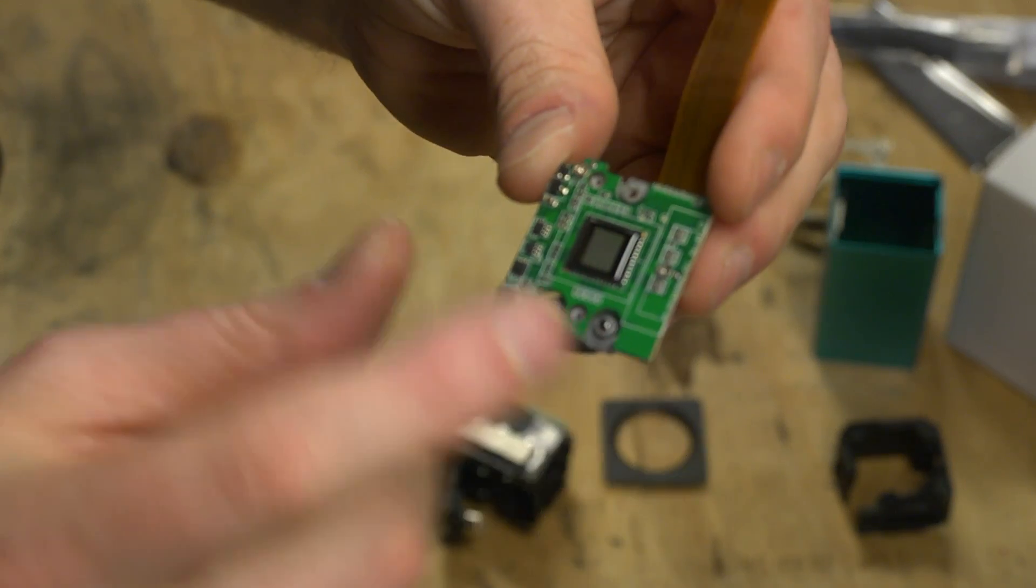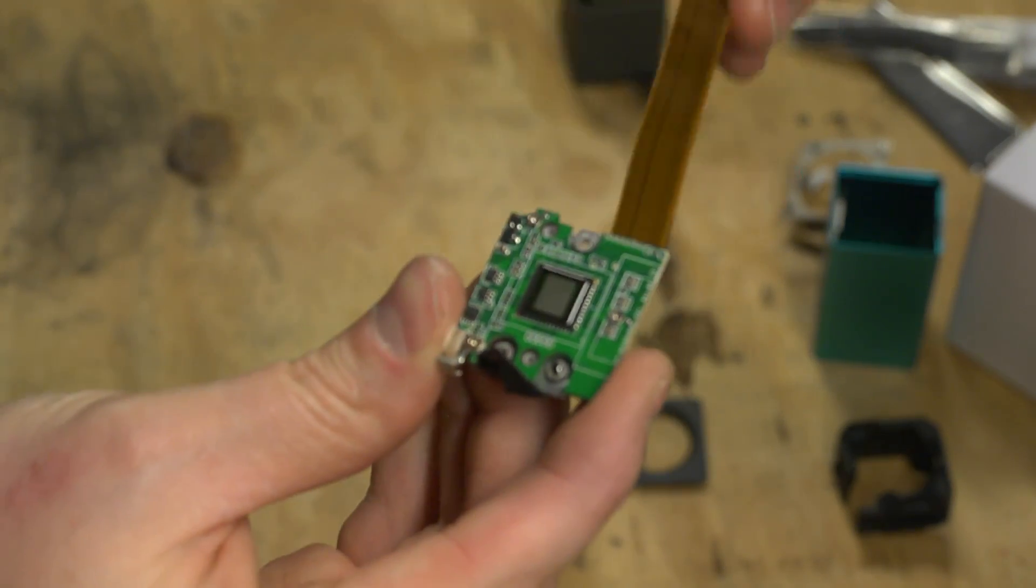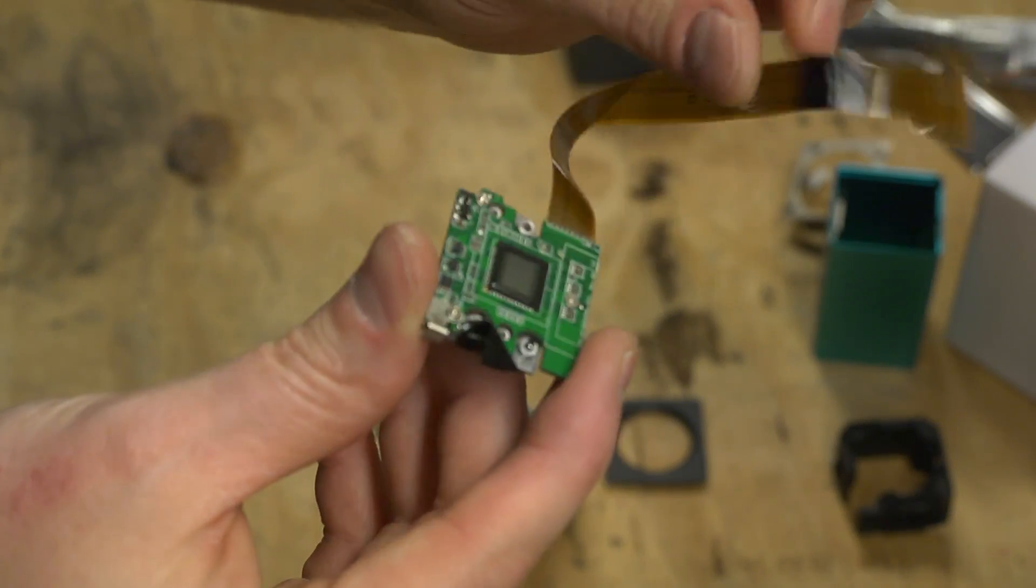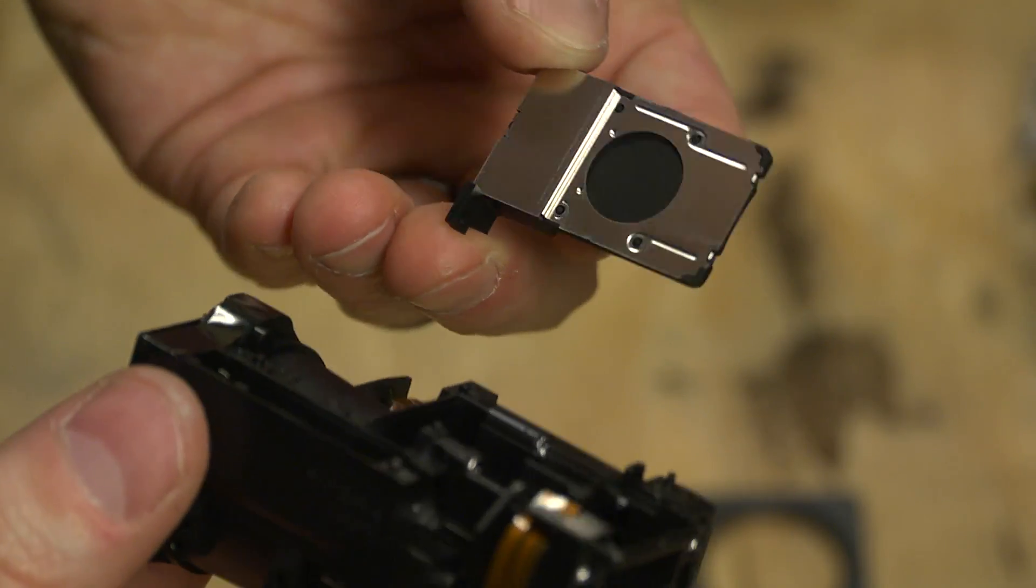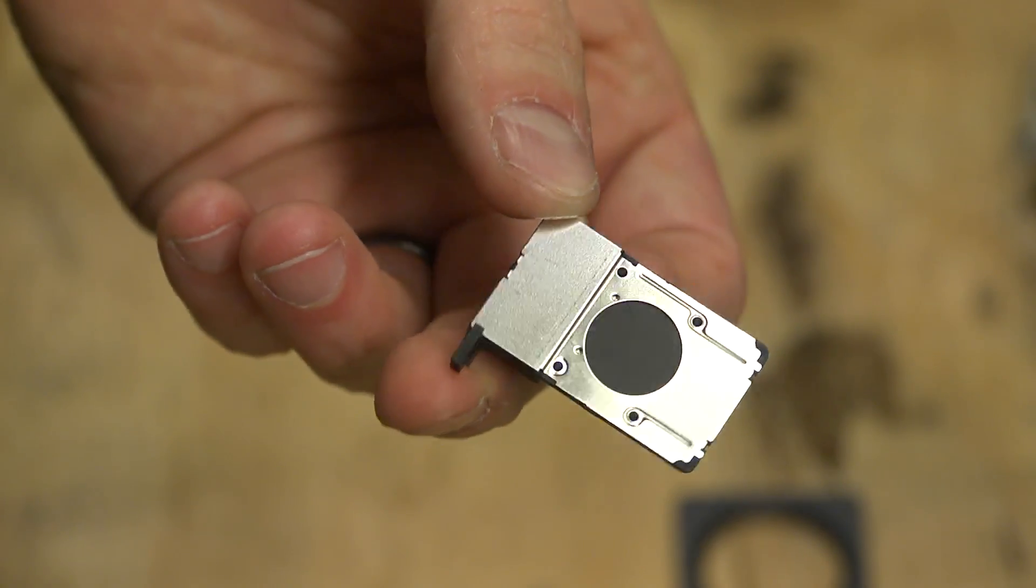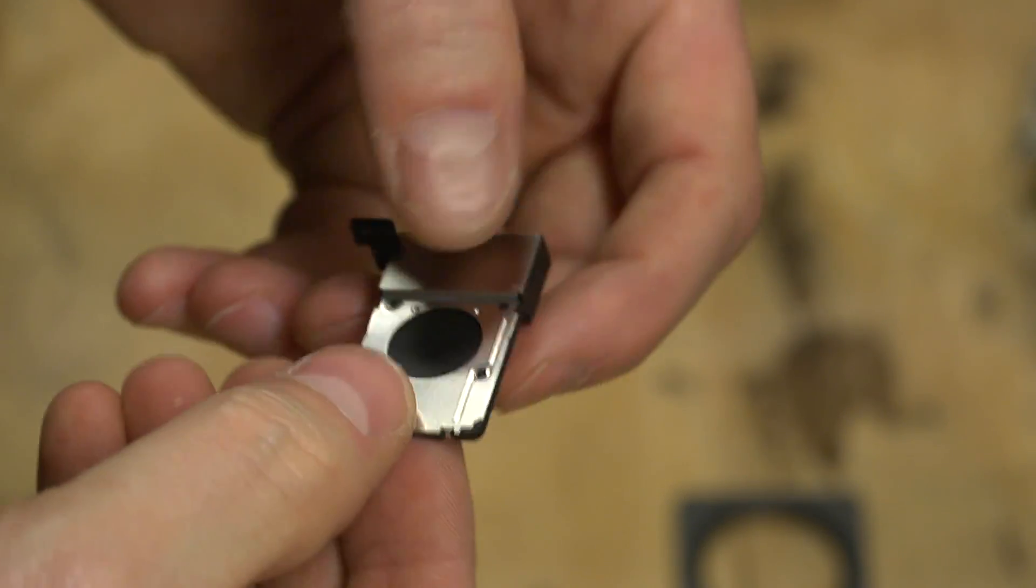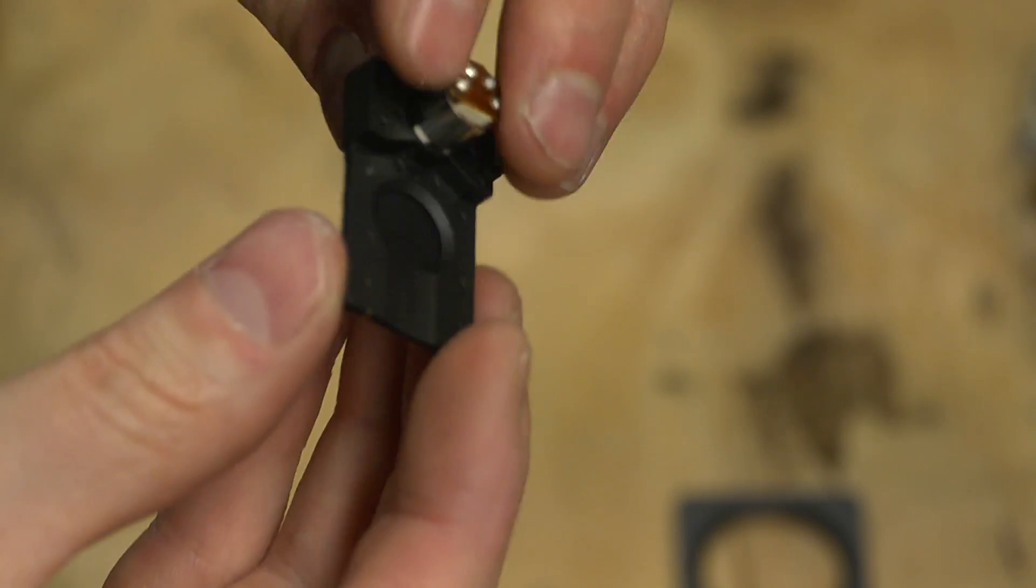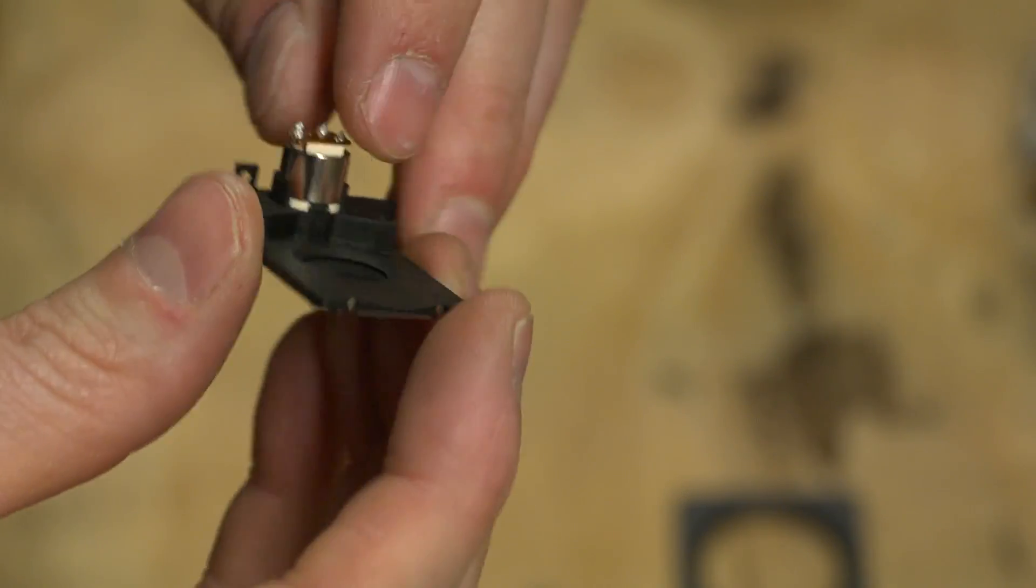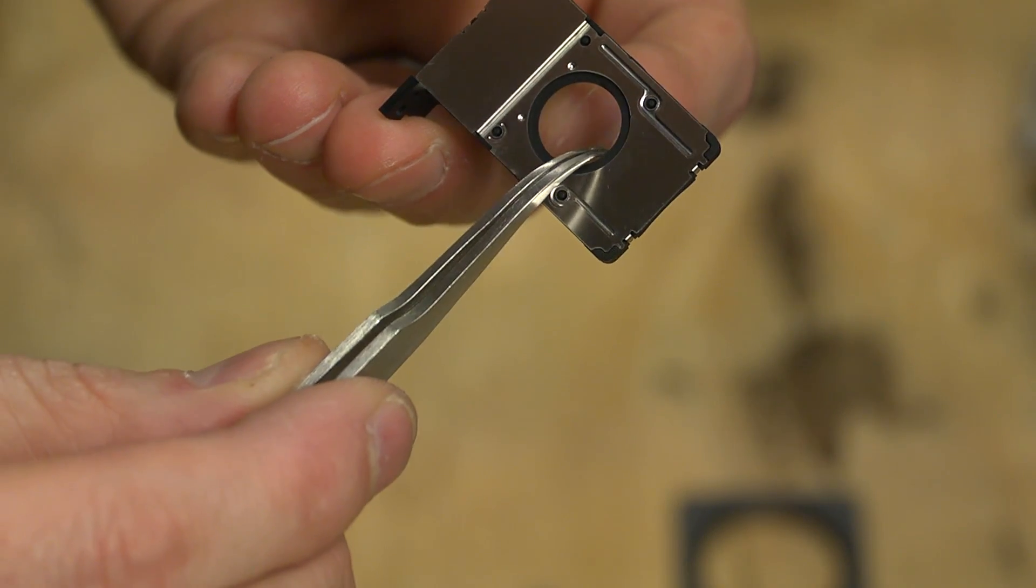So here we go. If anybody needs one, I just want you to know I have an extra Lytro sensor for sale right here. That looks like an electronic shutter. All the stuff in this camera is just so crazy.